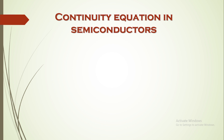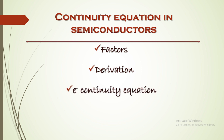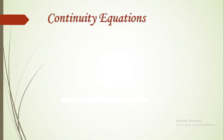In today's class we are going to study the continuity equation in semiconductors. There are two types of charge carriers — electrons and holes — and their corresponding flow, which is responsible for current, will be mathematically interpreted. We will cover: the factors responsible for deriving it, the derivation, the electron continuity equation, the hole continuity equation, and finally their interpretation in terms of current density J.